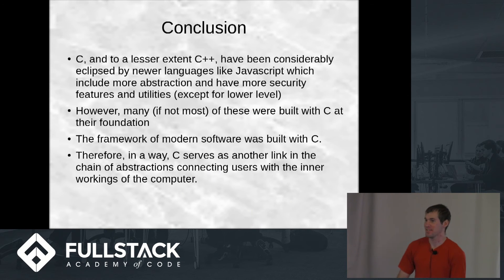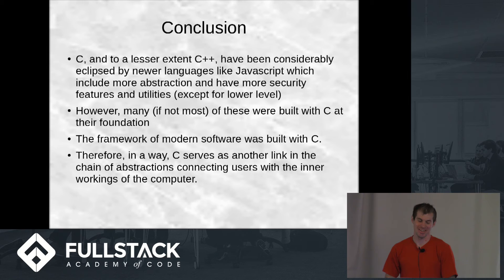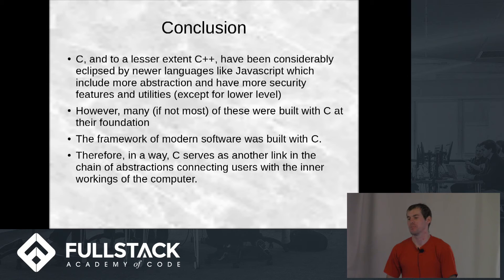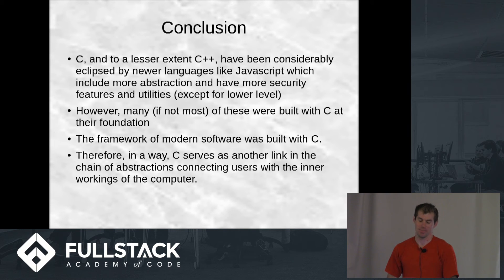My conclusion on C — and you can make whatever conclusion you want, this was just mine — was that C and C++ have actually been kind of eclipsed by other languages now, more modern ones like JavaScript and Python, ones that use a lot more abstraction and are easier to use for developing the most modern software and technologies. But you have to remember that a lot of them are built on C or built using C, and a huge amount of modern software — possibly the majority — was written in C.